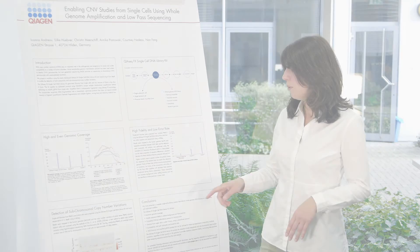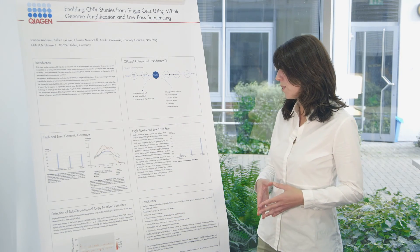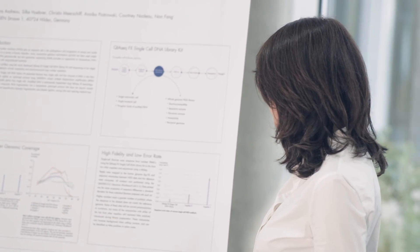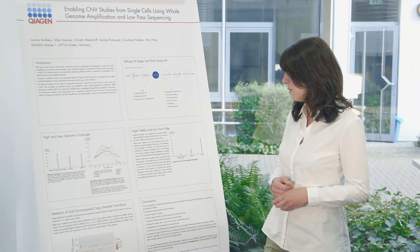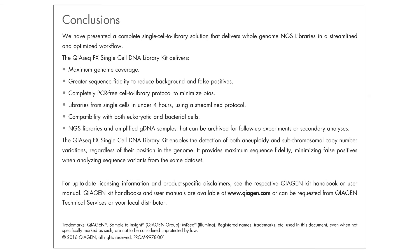Let me conclude now. What I have presented with this poster is a complete single cell to library workflow that delivered whole genome NGS libraries in a streamlined and optimized workflow. The QIAGEN FX single cell DNA library kit delivers very high genome coverage, delivers greater sequence fidelity and allows you to do variant calling without having a very high background. It's a completely PCR free cell to library protocol that means we have less sequence bias.